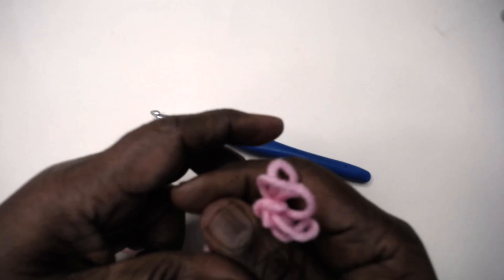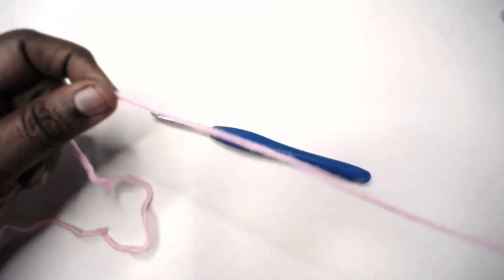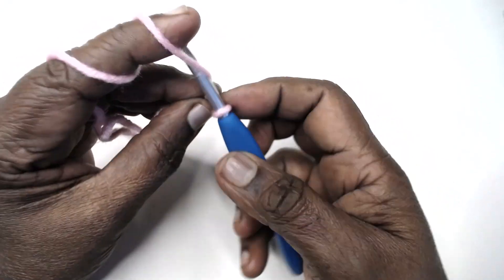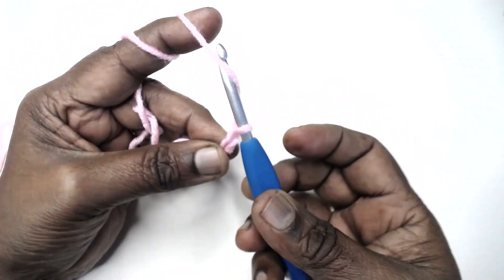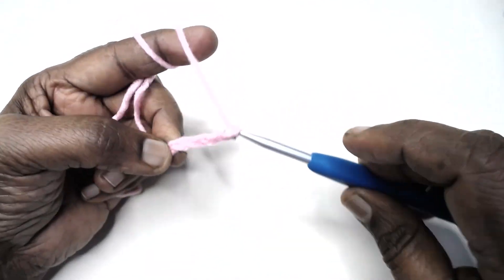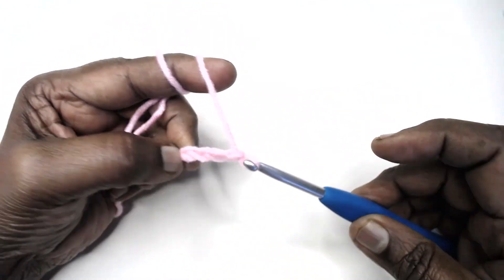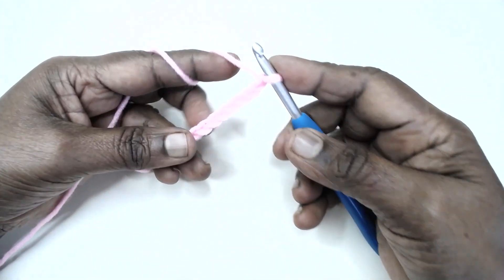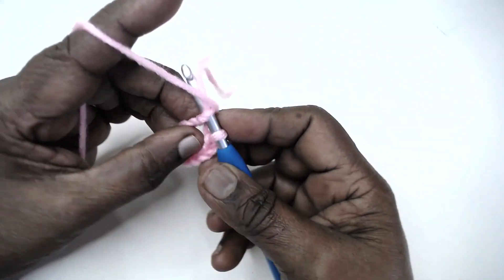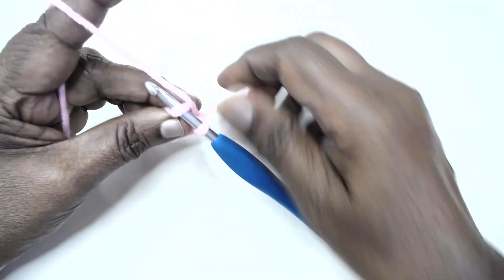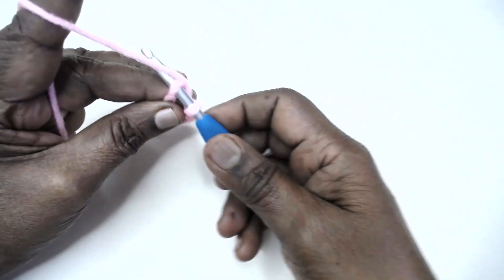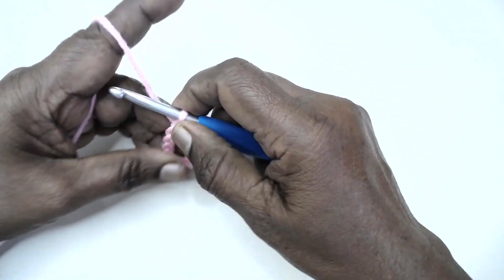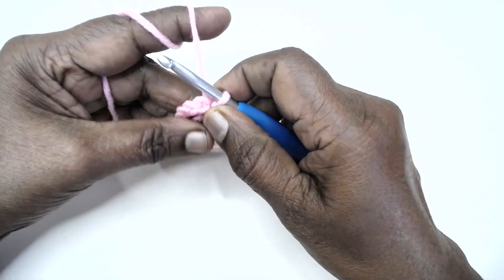To begin, chain 11, or you can go with a magic ring too. Let me chain 11. Having chained 11, slip stitch to the first chain and form a ring. Now chain 2 - chain 2 does not count as any stitch, just to give the height for a double crochet. This will get hidden in the stitches.